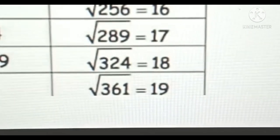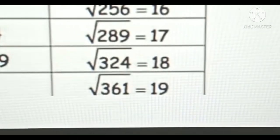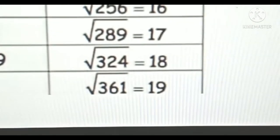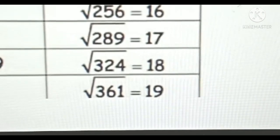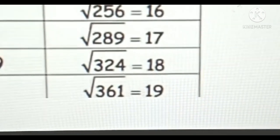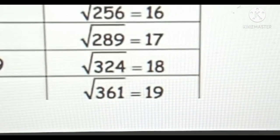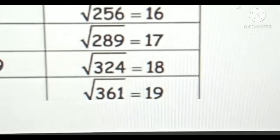Square root of 289 is equal to 17, square root of 324 is equal to 18, square root of 361 is equal to 19.